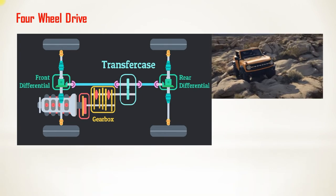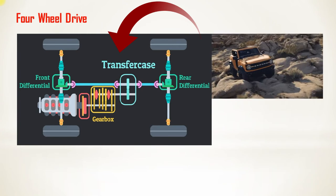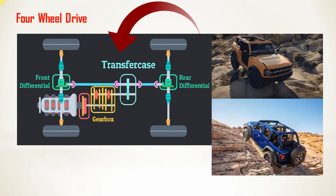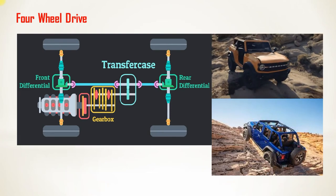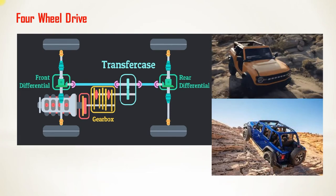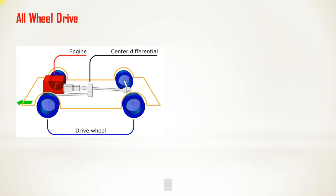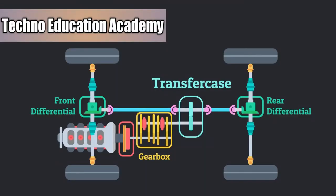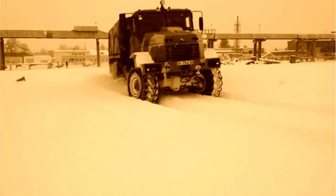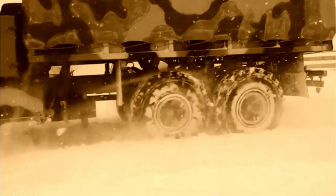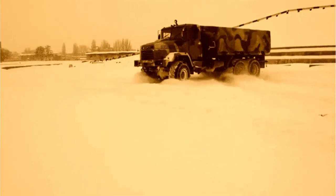In four wheel drive, we have the option to convert it into two wheel drive by manual shifting or with a switching mechanism. You can select two wheel drive under normal running conditions and four wheel drive for off-road situations. In all wheel drive, all wheels receive power all the time. The basic difference is: in four wheel drive you can switch to two wheel drive when not needed, but in all wheel drive there is no option to convert — all wheels receive power every time.